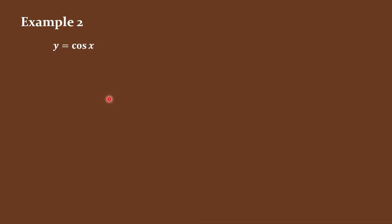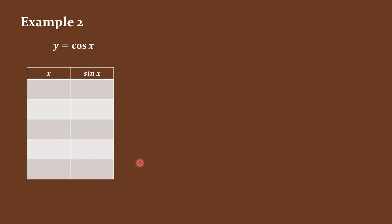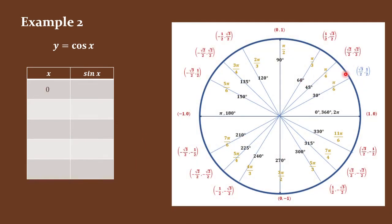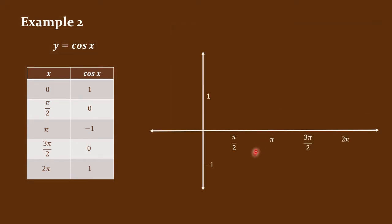For y = cosine x, let us use a table of values again. In reference to our unit circle, the cosine of 0 radians is 1, cosine of pi over 2 is 0, cosine of pi is negative 1, cosine of 3 pi over 2 is 0, and cosine of 2 pi is 1. Plotting: 0, 1; pi over 2, 0; pi, negative 1; 3 pi over 2, 0; and 2 pi, 1. This would be the graph of y = cosine x for one period.